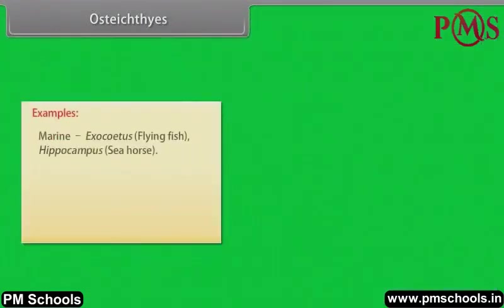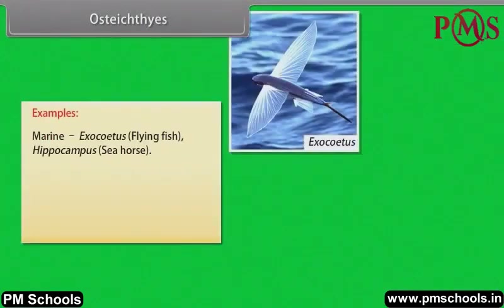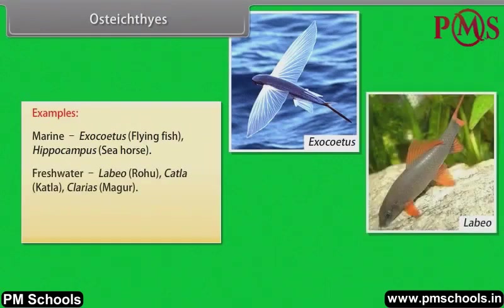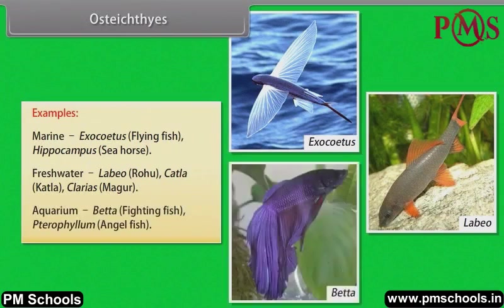Examples — Marine: Exocoetus (flying fish), Hippocampus (sea horse). Freshwater: Labeo (rohu), Catla, Clarias (magur). Aquarium: Betta (fighting fish), Pterophyllum (angel fish).